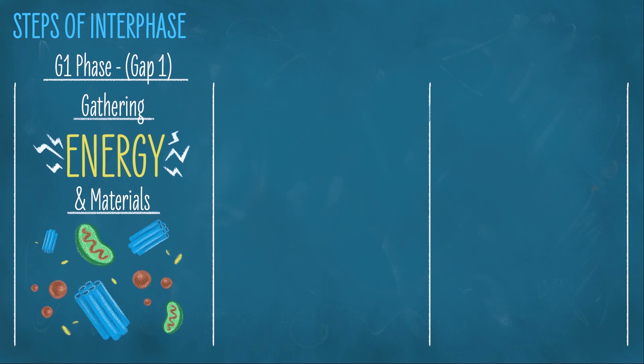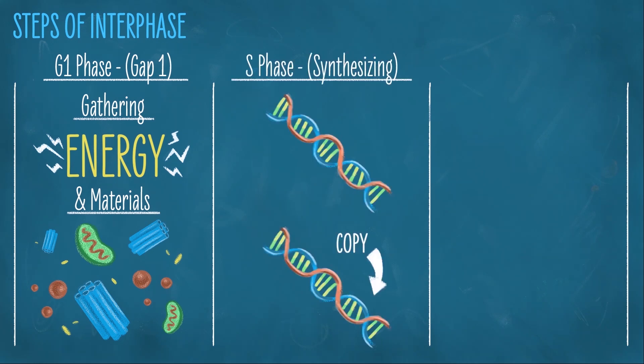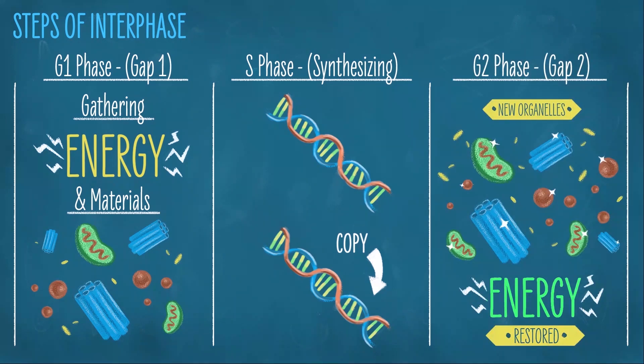The first step in interphase, gathering materials and energy, is called G1 phase, which stands for gap one. You couldn't make a copy of anything without the energy and materials to do so. The next step in interphase, synthesizing or copying DNA, is called S phase, which stands for synthesis. The final step in interphase is where the cell makes more copies of the organelles and replenishes its energy because division is hard work. This step is called G2 phase, which stands for gap two.